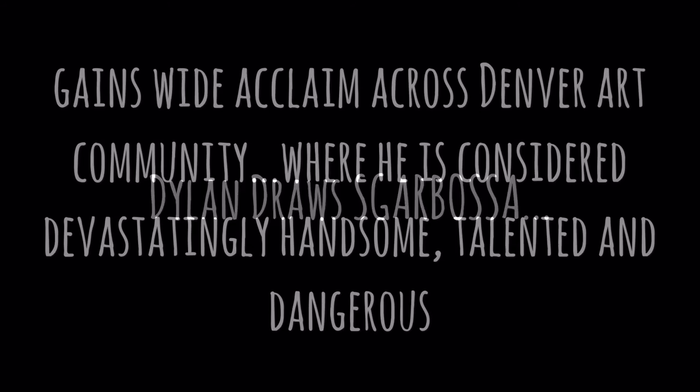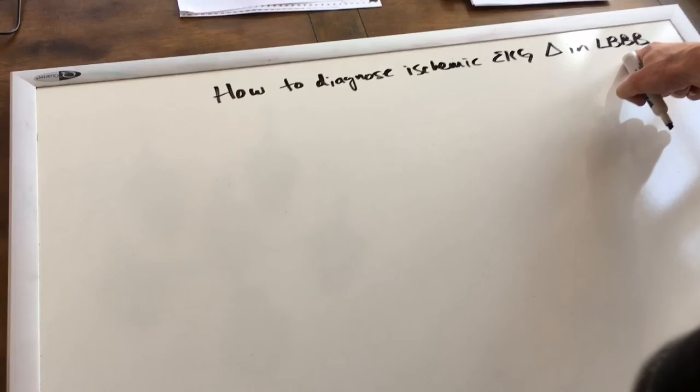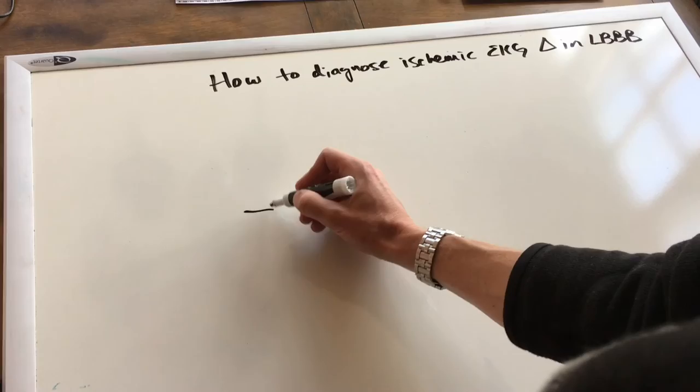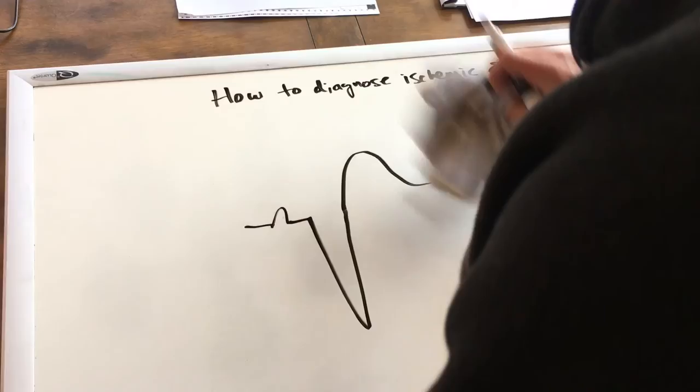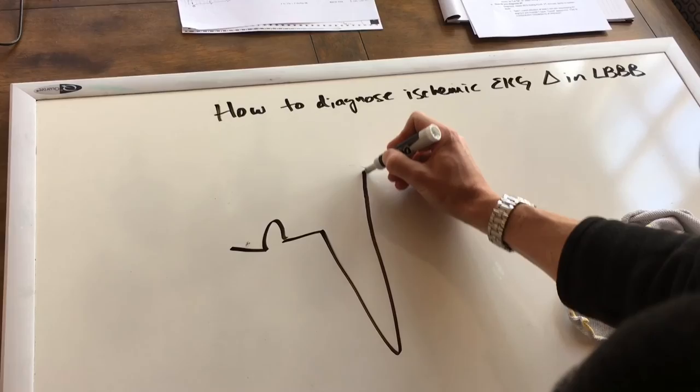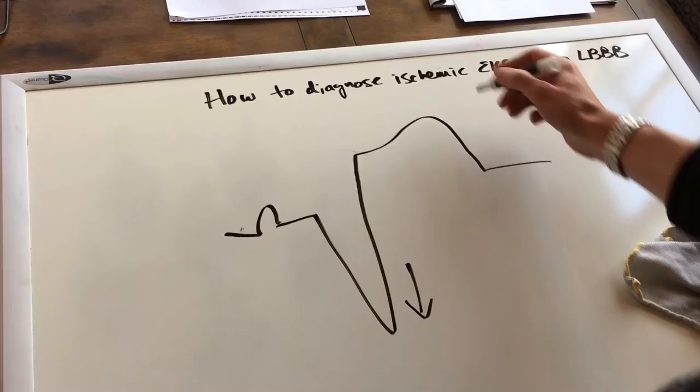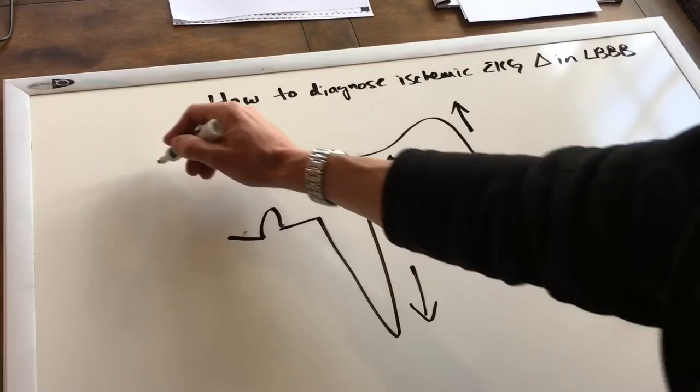First, Dylan's going to draw you some pretty pictures. This is the companion piece to that earlier podcast about diagnosing ischemia on an EKG with a left bundle — the same would hold true for a pacemaker. The concept is that in a left bundle, you would expect the QRS going in one direction and the T wave and ST segment going in the opposite direction.